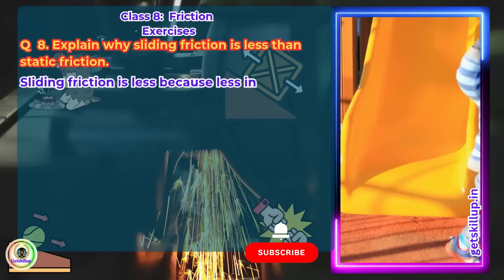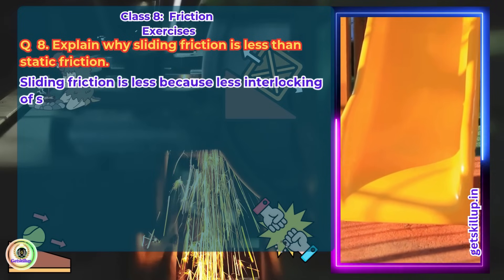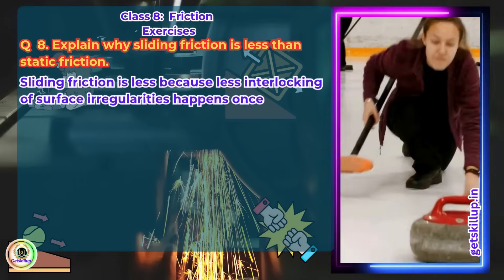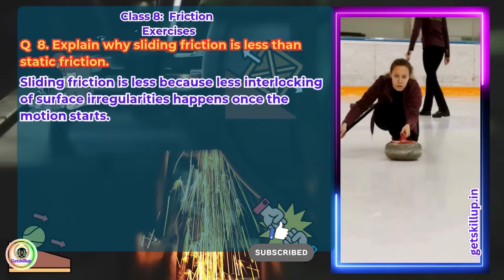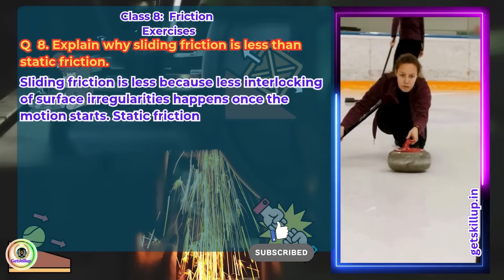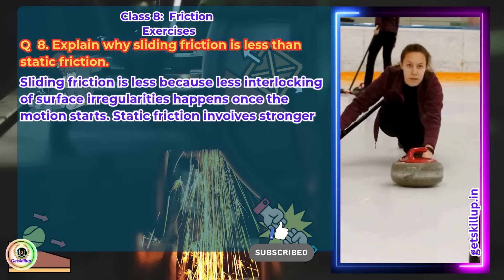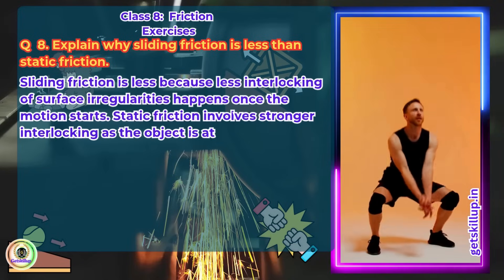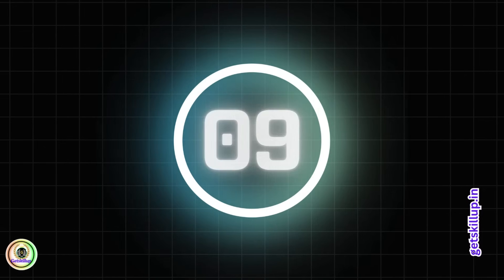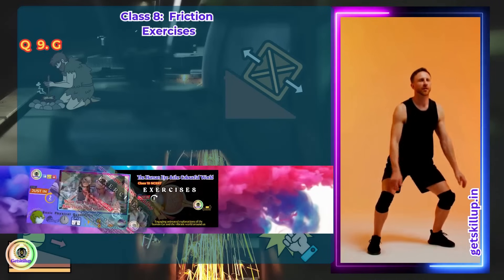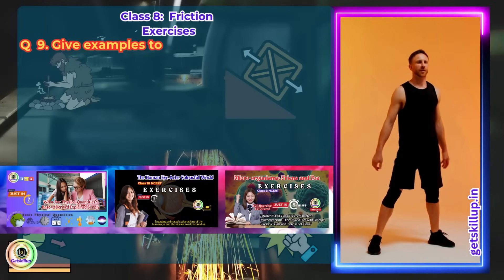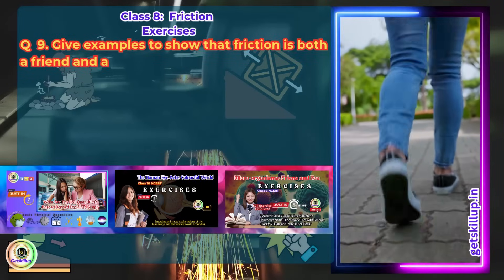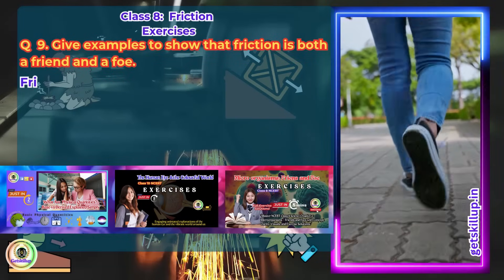Question 8: Explain why sliding friction is less than static friction. Answer: Sliding friction is less because less interlocking of surface irregularities happens once motion starts. Static friction involves stronger interlocking as the object is at rest.